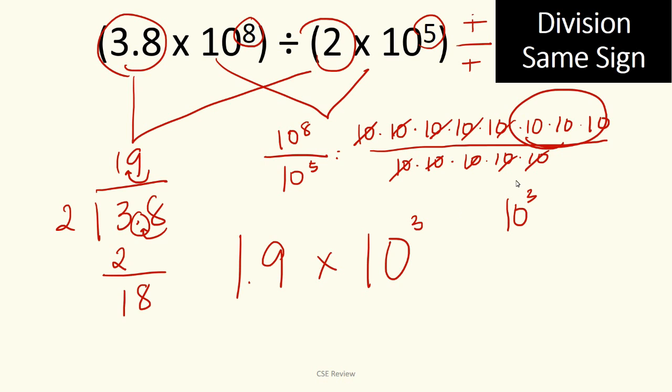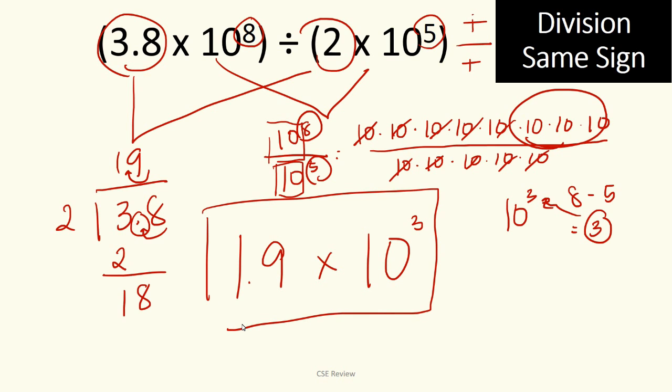So the answer is 10 raised to 3. Now, what is the quicker way to do that without writing repeatedly so we don't get dizzy or confused on exam day? You just basically subtract it. If you notice, 8, this exponent on top, 8 minus 5 is still 3. So that's also the exponent there. So what we're going to do, when we divide, when there's an exponent, and they have the same base number, you just subtract the number on the bottom from the number on top. So 8 minus 5 is 3. The answer is 1.9 times 10 raised to 3.